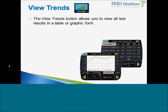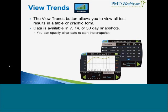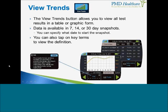The View Trends button allows you to view all test results in a graph or table form. You can view your data over the last 7, 14, or 30-day snapshots, and then specify whatever date you'd like to begin that snapshot. You can also tap on key terms to view the definition — for example, if you forget what FVC means, simply click on the key term and a pop-up will give you the definition.